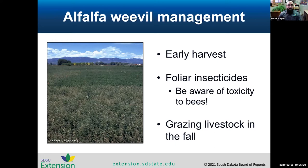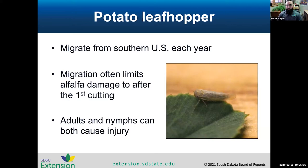The next pest is the potato leafhopper — a small, pale green, bullet-shaped insect. It's a migratory insect that comes up from the southern United States each year, which limits damage to the later cuttings. The first cutting is usually out before these even show up. The injury is referred to as hopper burn — they feed on plant xylem and it looks like drought stress. It reduces the quality of the plant, can cause stunting, and reduces the protein content.